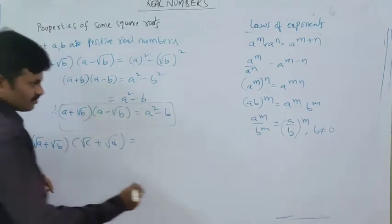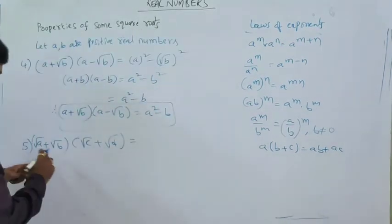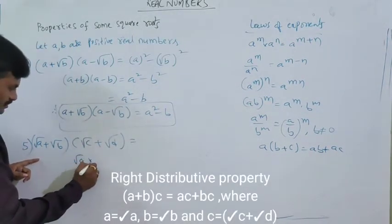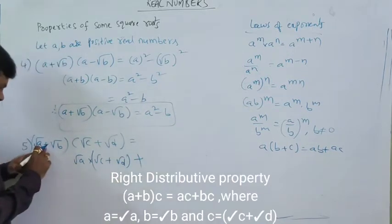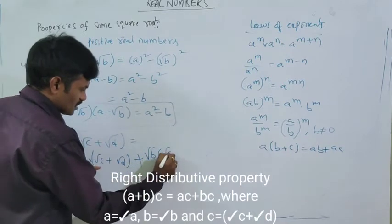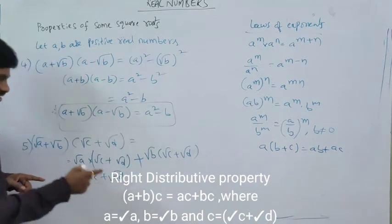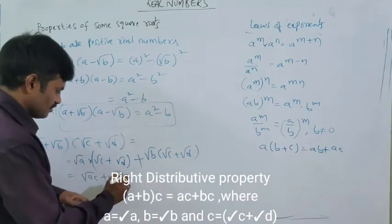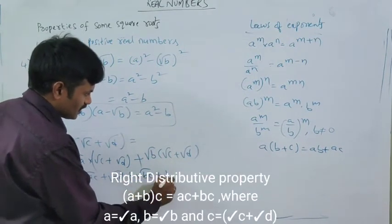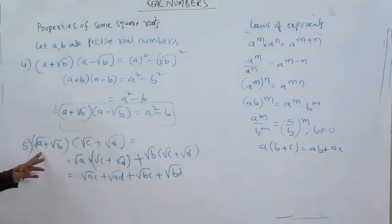By applying the distributive property: root A into the whole expression root C plus root D, plus root B into the whole expression root C plus root D. Simplifying using the first property — that root A into root B equals root AB — we get: root AC plus root AD plus root BC plus root BD. This is the formula to multiply two binomial square root expressions.